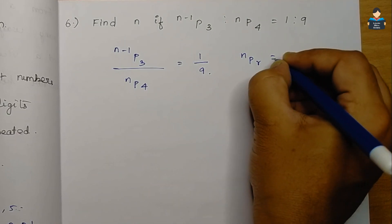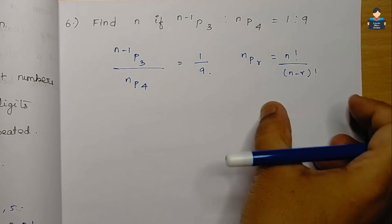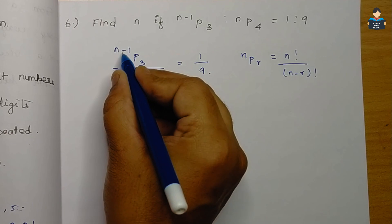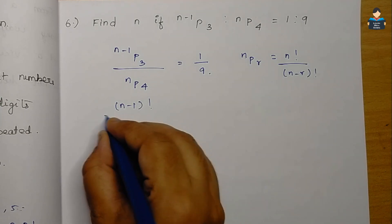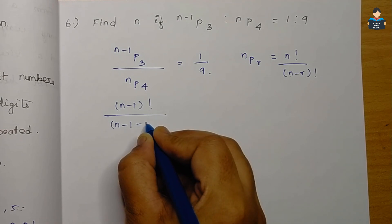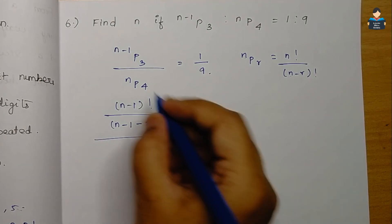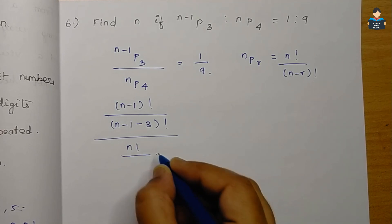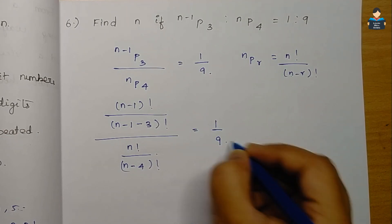Using the formula nPr = n! / (n - r)!, we write (n-1)P3 = (n-1)! / (n-1-3)! = (n-1)! / (n-4)! and nP4 = n! / (n-4)!. Setting up the ratio: [(n-1)! / (n-4)!] divided by [n! / (n-4)!] = 1/9.